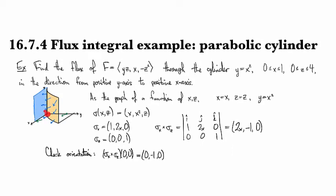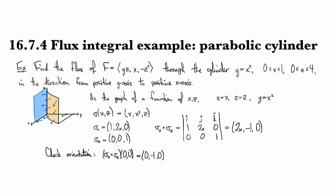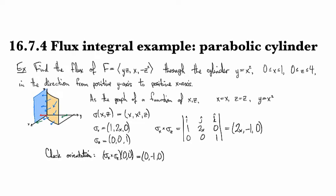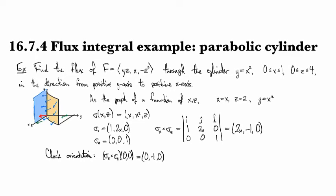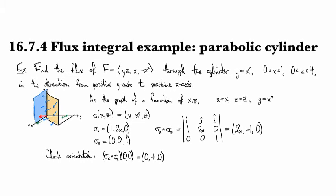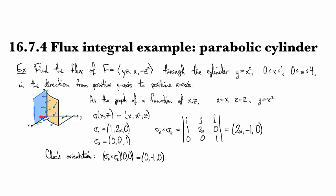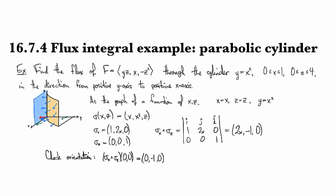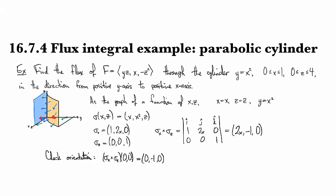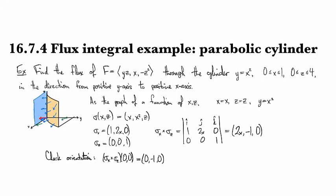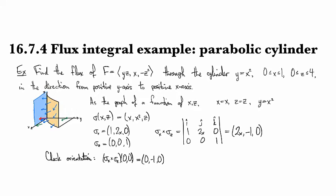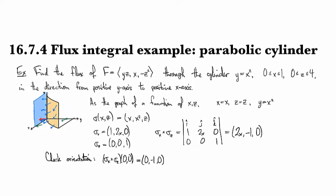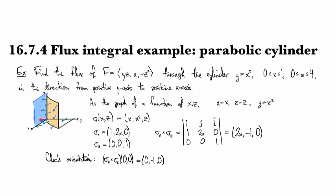And so sigma of zero zero, that's right here at the origin. And so the vector that it attaches there is zero minus one zero, which is this guy. And so that one agrees with what I expect to be coming from the unit normal vector positively oriented in that direction.